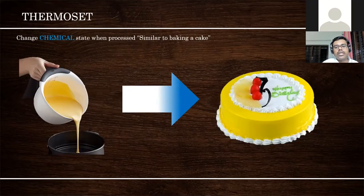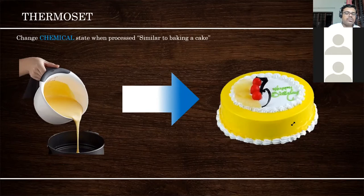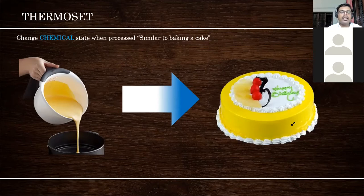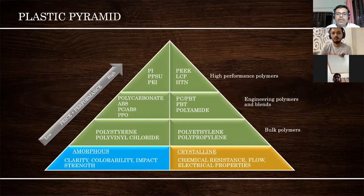Thermoset — the name itself says it gets set under temperature and pressure. It is like a cake baking process: once you take cake dough, put it in an oven and make a cake, you cannot change it back to the dough. In thermoplastics only a physical form change happens, but in thermoset a chemical reaction and chemical changes happen, and there is cross-linking. Once it is done you cannot reverse the process, so thermosets cannot be recycled. Earlier-day switches, melamine switches and melamine plates, are all made of thermosets.